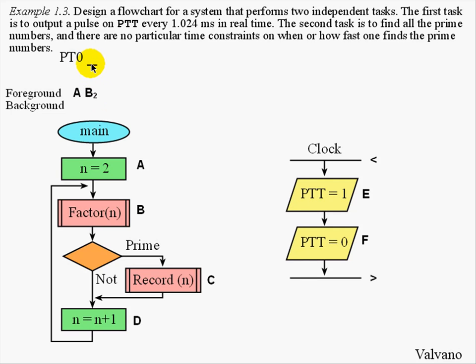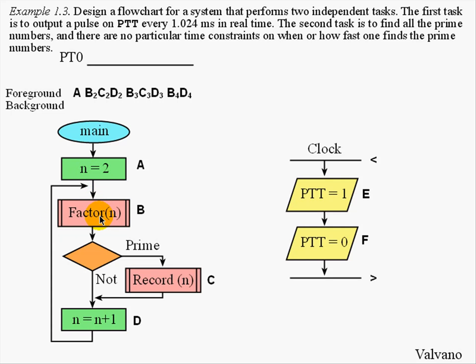At this point, the output on PT0 is low. The profile continues with the main program executing step C, recording the prime number 2, executing step D, incrementing N from 2 to 3, and looping through again, looking at prime number 3 which is B3, recording the 3 which is C3, and going to the next step D3. The next time through the loop, N is 4, and 4 is not prime and so it will not be recorded. So we have B4 and D4.